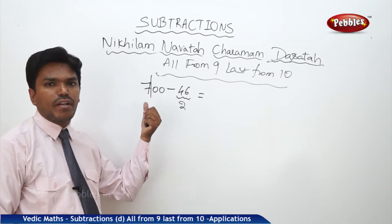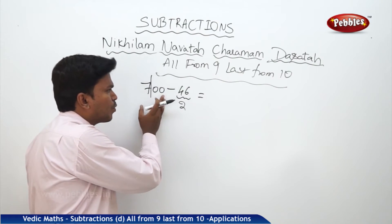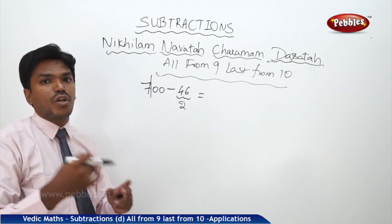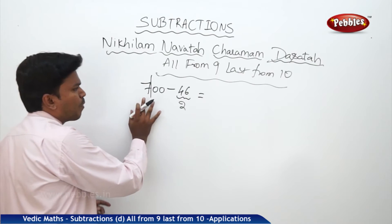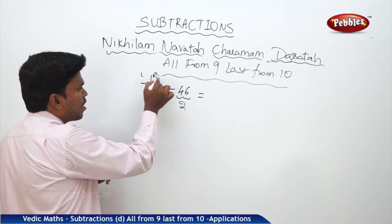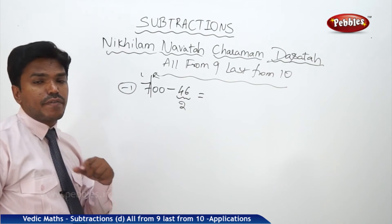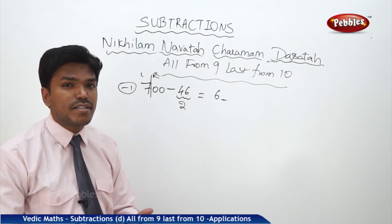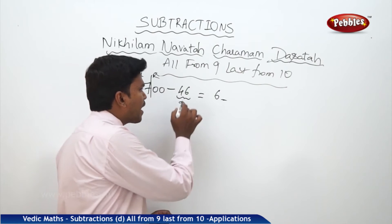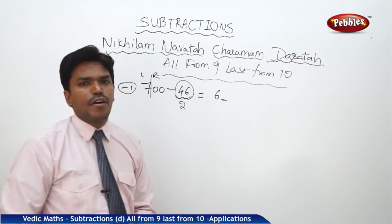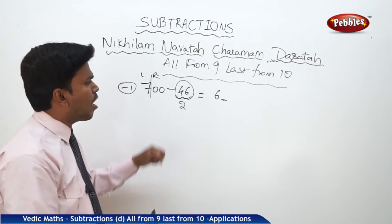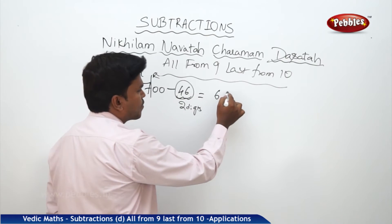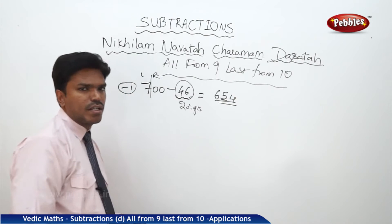If it is 2 digits, partition 2 digits from the right; if it is 3 digits, 3 digits from the right; if it is 4 digits, 4 digits from the right — like that you have to make a partition. Now the number is divided into two parts: left side and right side. To the left side part, subtract 1 — so 7 becomes 6. To get the remaining answer, simply apply All from 9, Last from 10 to the subtrahend, that is, to 46. All from 9, Last from 10 applied to 46 gives 54. So my answer is 654.